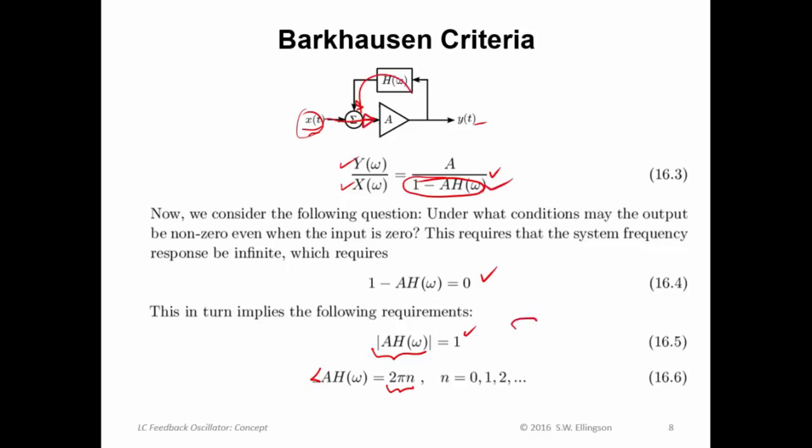So the phase of a times h must be either zero or two pi or some multiple of two pi so that whatever comes back here adds in phase. So these two things are referred to as the Barkhausen criteria or you could just call it the Barkhausen criterion because really those are just elaborating on this idea. So we require the magnitude of a times h to be one we sometimes refer to that as loop gain. The loop gain should be one and the phase of the feedback path should be either zero, two pi, four pi or so on.